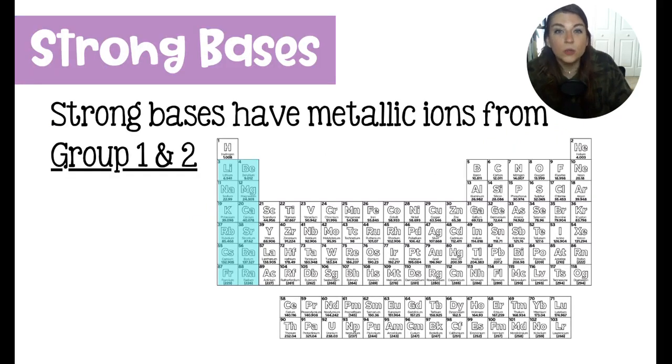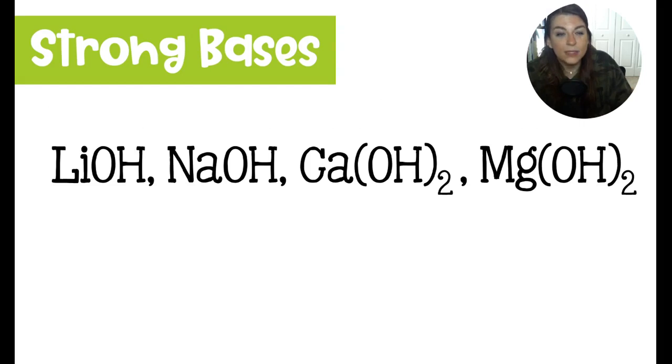Strong bases, ones that dissociate nearly at 100%, are going to be found in groups 1 and 2 on the periodic table. This means that they love to dissolve. If you remember your solubility rules, group 1 ions love to dissolve. So sodium hydroxide, potassium hydroxide, lithium hydroxide, dissolving at 100%. And the same is going to be true for these group 2 ions: beryllium, magnesium, calcium, and so on.